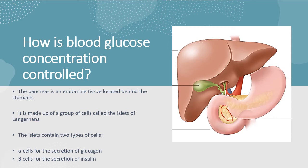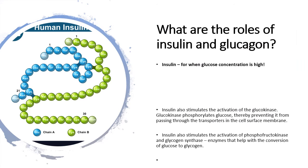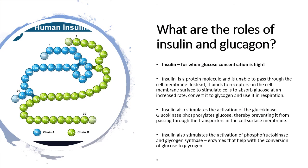Now insulin is the more commonly known one because we know it controls blood glucose concentration, but so does glucagon. I also feel the need to tell students that insulin does not break down glucose — it doesn't store glucose either. It is the one that stimulates the reaction. Insulin is a hormone; it doesn't react directly with glucose.